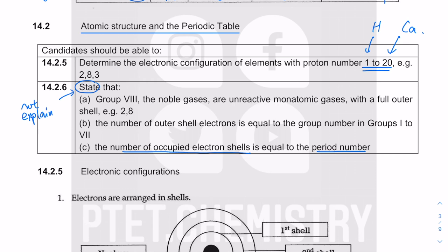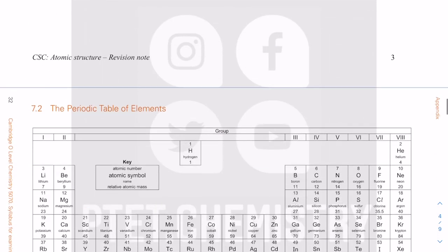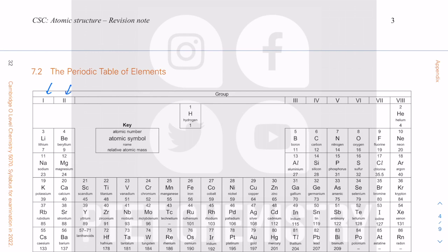I will explain where these come from, but you'll be able to use the periodic table and state the period number or group number. You'll see that there are groups one to seven — these are roman numerals. In the periodic table on top you have group one, two, three, four, five, six, seven, and then group eight.